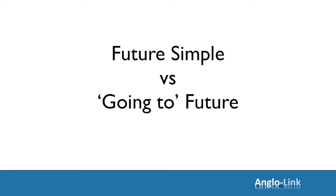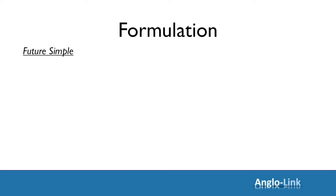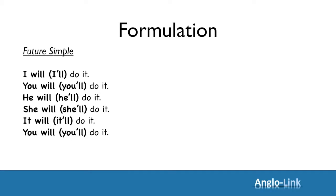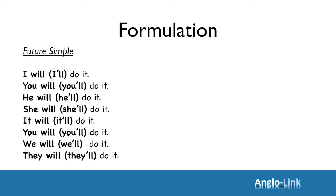Future simple and going to future. Let's look at formulation first. Future simple is really the simplest tense in English. Just add will to your pronoun and then the infinitive. I'll do it. You'll do it. He'll do it. She'll do it. It'll do it. You'll do it. We'll do it. And finally, they'll do it.